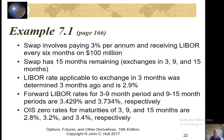Let's consider a swap that involves paying 3% per annum and receiving LIBOR every six months on a $100 million principal. The swap has 15 months remaining, with exchanges in 3, 9, and 15 months. The LIBOR rate applicable to the exchange in three months was determined three months ago and is 2.9%. The forward LIBOR rates for the periods 3-to-9 months and 9-to-15 months are 3.429% and 3.734%, respectively. The OIS zero rates for maturities of 3, 9, and 15 months are 2.8%, 3.2%, and 3.4%, respectively.